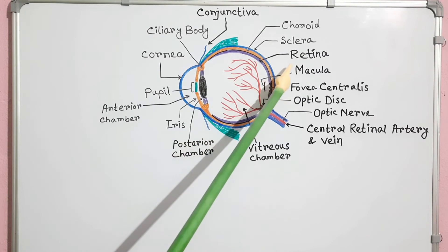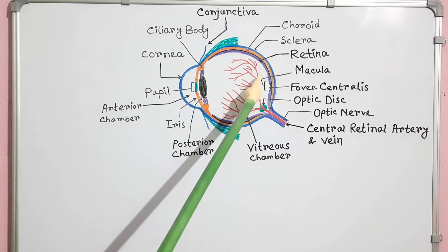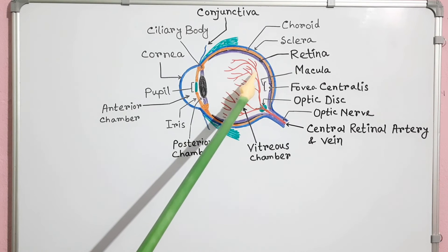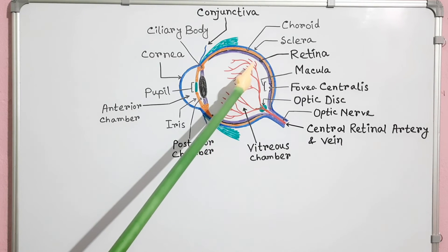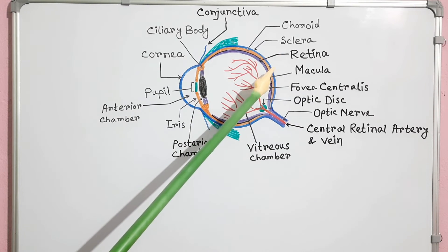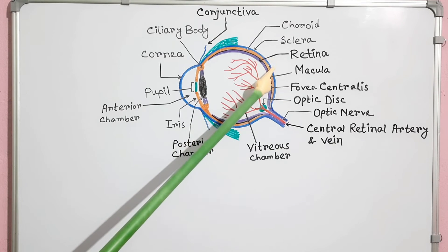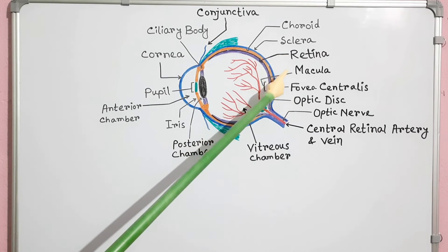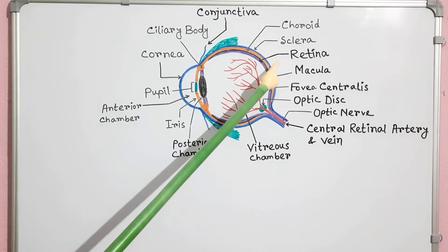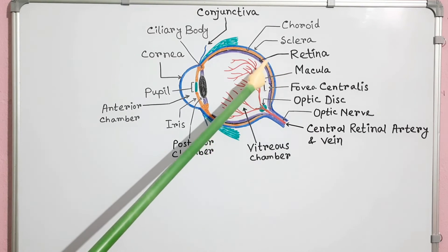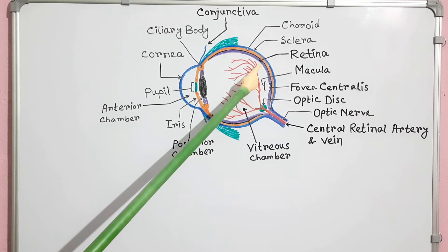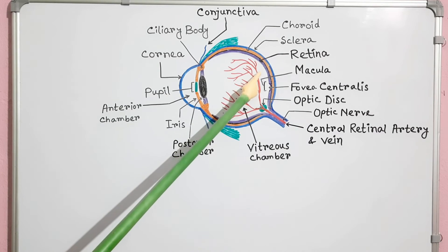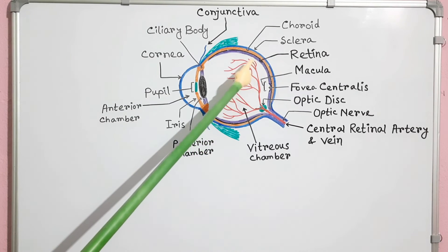The retina consists of two components: the neural retina and the retinal pigment epithelium. The neural retina contains over 126 million light-sensitive receptors and complex neuronal networks. The photoreceptor cells respond to light. The retinal pigment epithelium is composed of simple cuboidal melanin-containing cells.